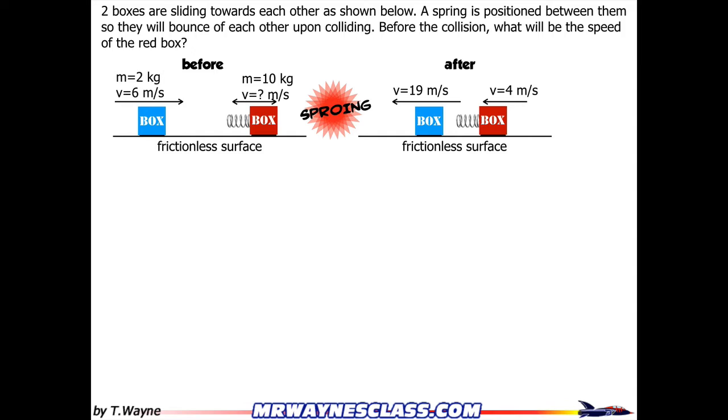Two boxes are sliding towards each other as shown below. A spring is positioned between them so they will bounce off each other upon colliding. Before the collision, what will be the speed of the red box?